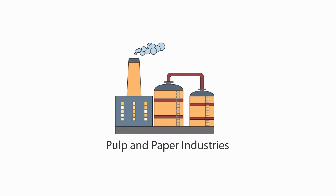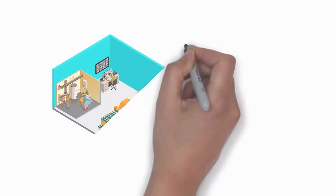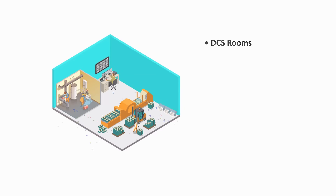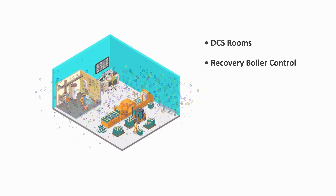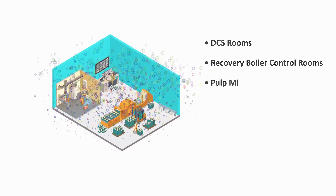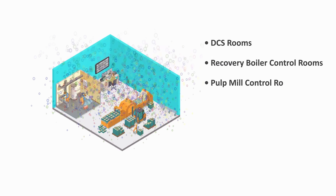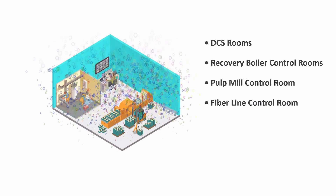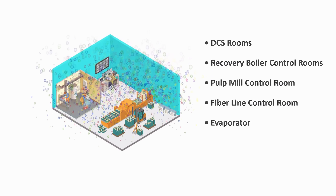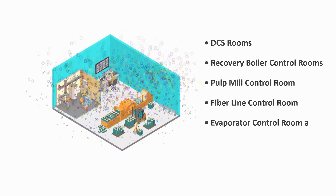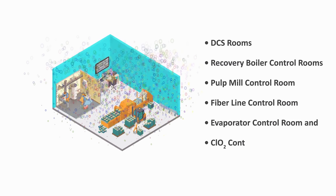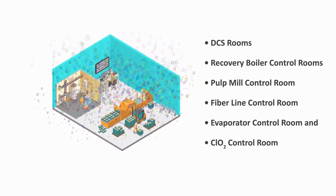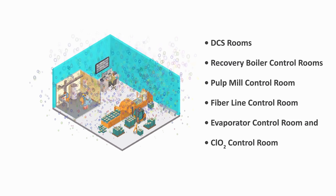In pulp and paper industry, DSC rooms, recovery boiler control rooms, pulp mill control room, fiber line control room, evaporator control room, and CLO2 control room are affected by corrosive gases.